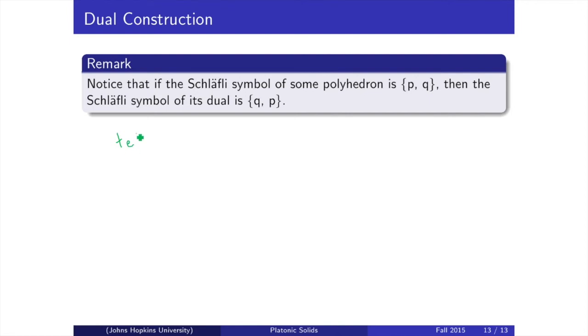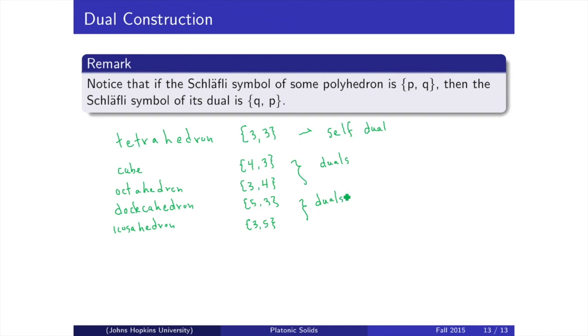Now, this is where the Schläfli symbol comes in. If the Schläfli symbol of some polyhedron is {p, q}, taking its dual will make the vertices faces and the faces vertices. So, if P was the number of edges around the face in the original polyhedron, that will now be the number of faces around the vertex in the dual. And in the same way, Q, which is originally the number of faces or edges around the vertex, that will now be the number of edges around the face, which is the same thing as the number of sides of each face. Therefore, if the Schläfli symbol of the original polyhedron was {p, q}, the Schläfli symbol of its dual will be {q, p}. From this, we could see that the tetrahedron is self-dual, the cube and octahedron are duals of each other, and the dodecahedron and icosahedron are duals of each other.